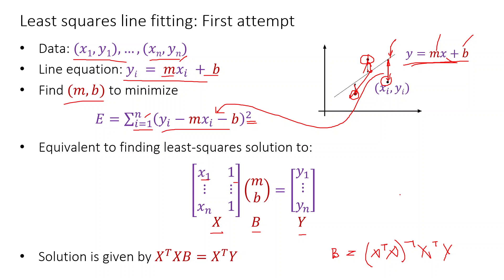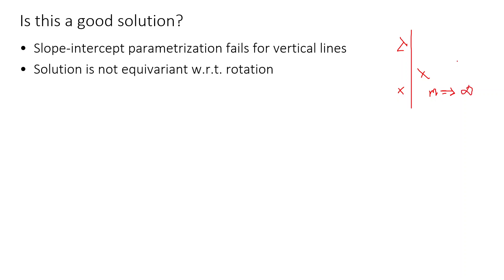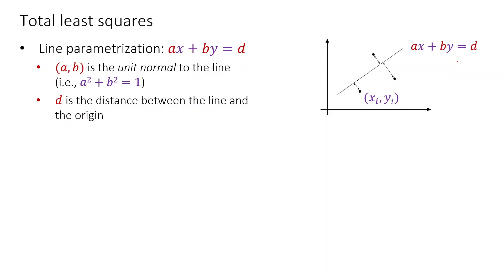To compute this we can use a pseudo-inverse. But is this a good solution? Actually, the slope-intercept parameterization fails for vertical lines. If the line is vertical, then m is infinity and this computation fails as m tends to infinity. Also, the solution is not rotation-equivariant — when the line rotates, the solution does not properly rotate. So we are more interested in total least squares line fitting, where rather than taking the vertical distance to the line we take the perpendicular distance.